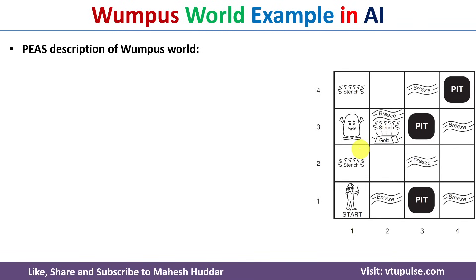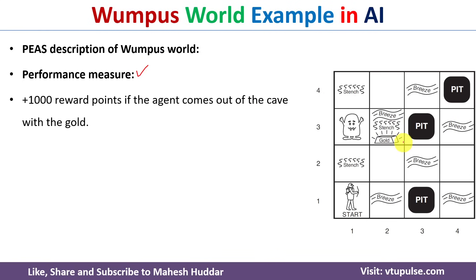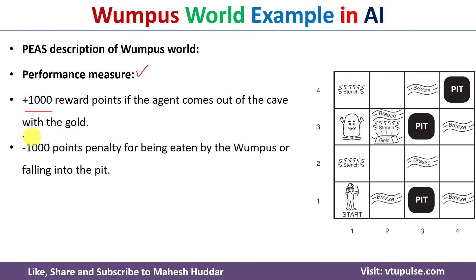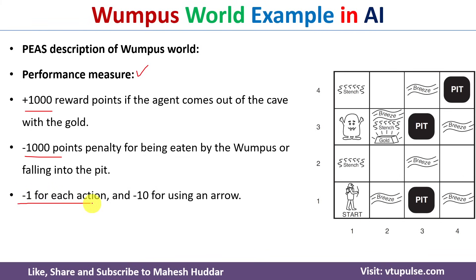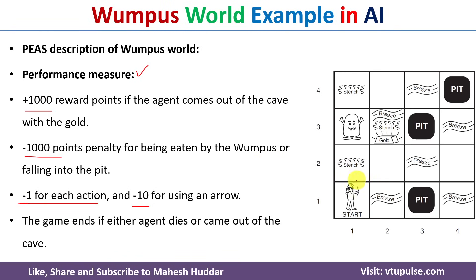Now we will discuss the PEAS description of Wumpus World. PEAS stands for Performance, Environment, Actions, and Sensors. For the performance measure: whenever the agent comes out of the cave with gold, he is awarded 1000 points. Whenever the agent falls into the pit or is eaten by the Wumpus, he is awarded minus 1000 points. Whenever the agent performs an action — move forward, turn left 90 degrees, grab gold — minus 1 point is deducted. Whenever the agent uses the arrow to shoot the Wumpus, minus 10 points are deducted. The game ends whenever the agent dies or comes out of the cave with gold.